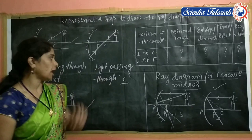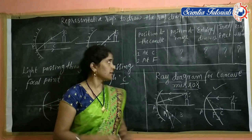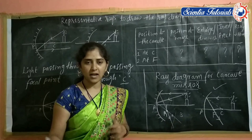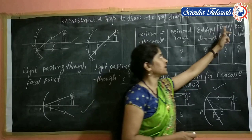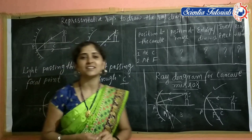Now that we know the ray diagrams, we are going to discuss where the image will be formed based on the position of the object — the position of the candle in front of the concave mirror and the position of the image. We will look at the characteristics of the image: is it enlarged or diminished? Is it inverted or erect? Is it a real image or virtual image? We will discuss this in another session. I hope students, you understand this session about the formation of ray diagrams.